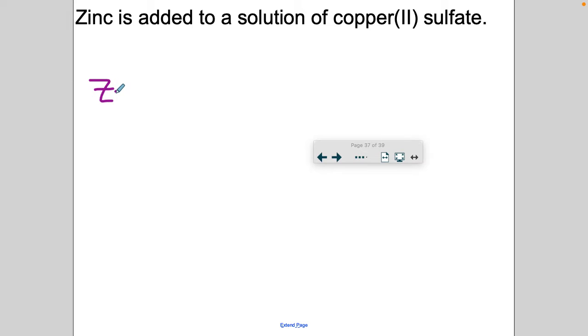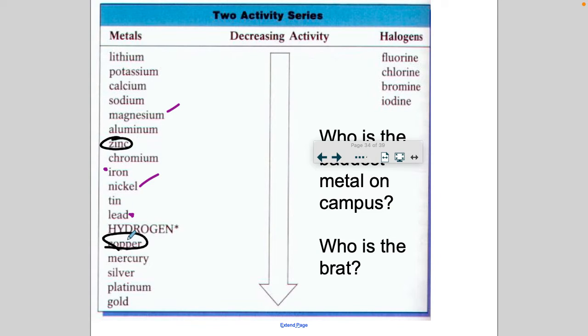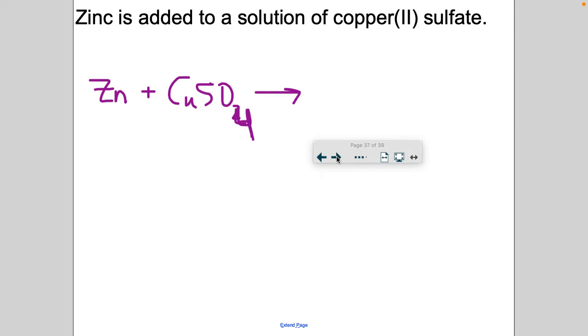Okay, zinc and copper 2 sulfate. Let's see, sulfate is SO4 with a minus two, so the charges balance out. All right, so we got to find zinc and copper. Here's zinc, here's copper. Copper's lower. Yep, so it budges. And it's balanced, so I don't have to worry about that.